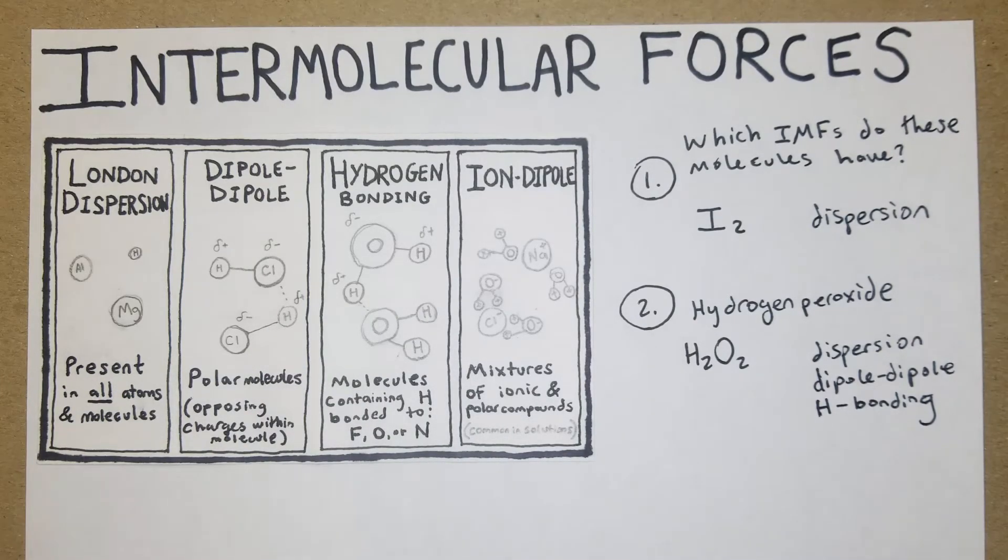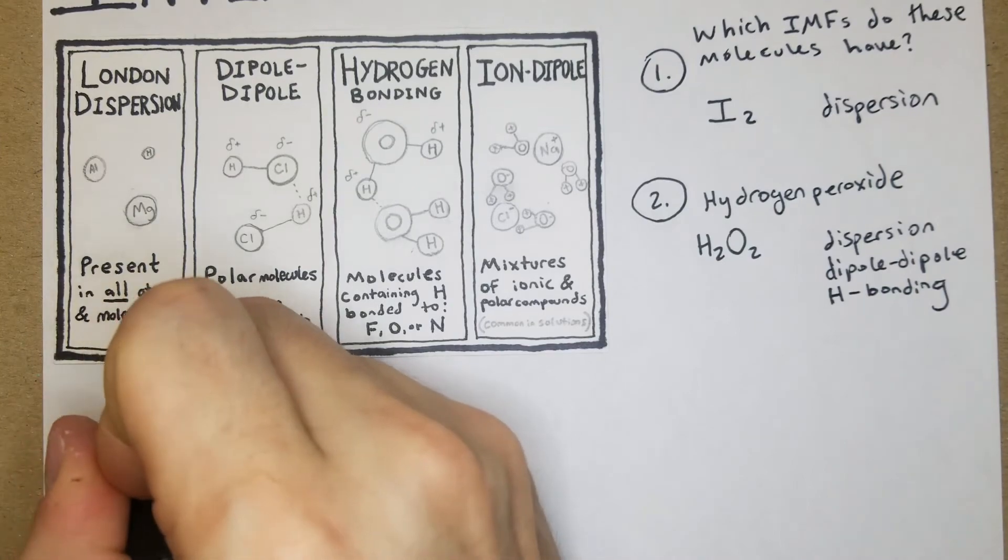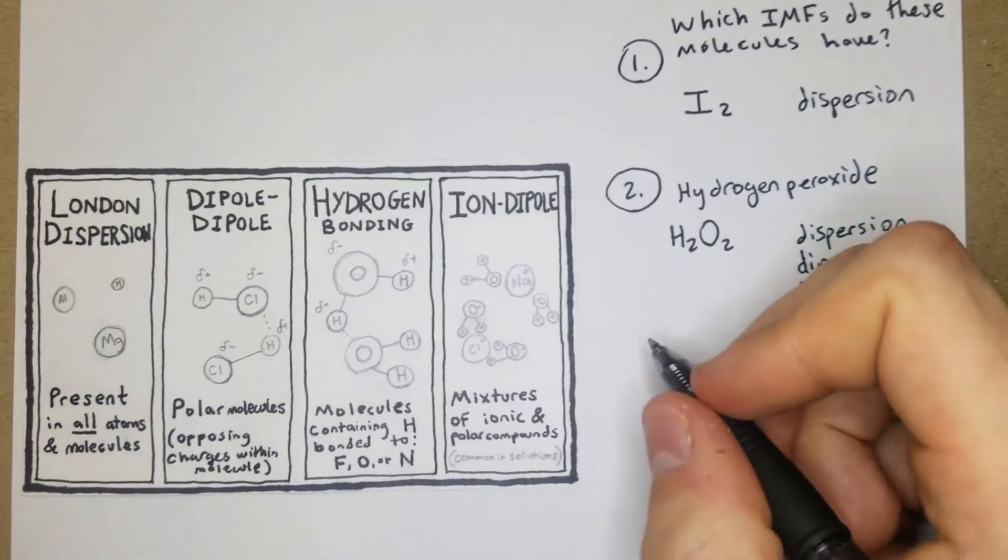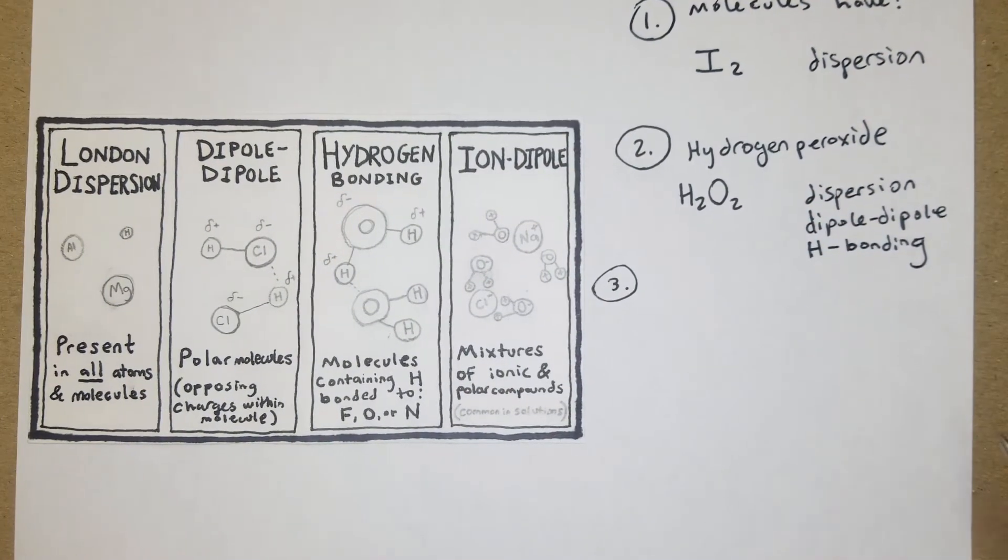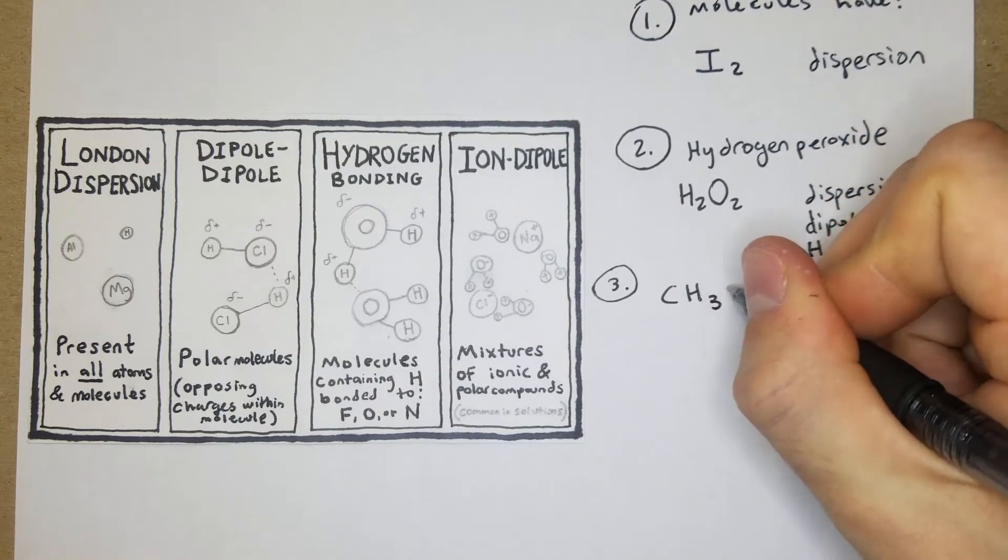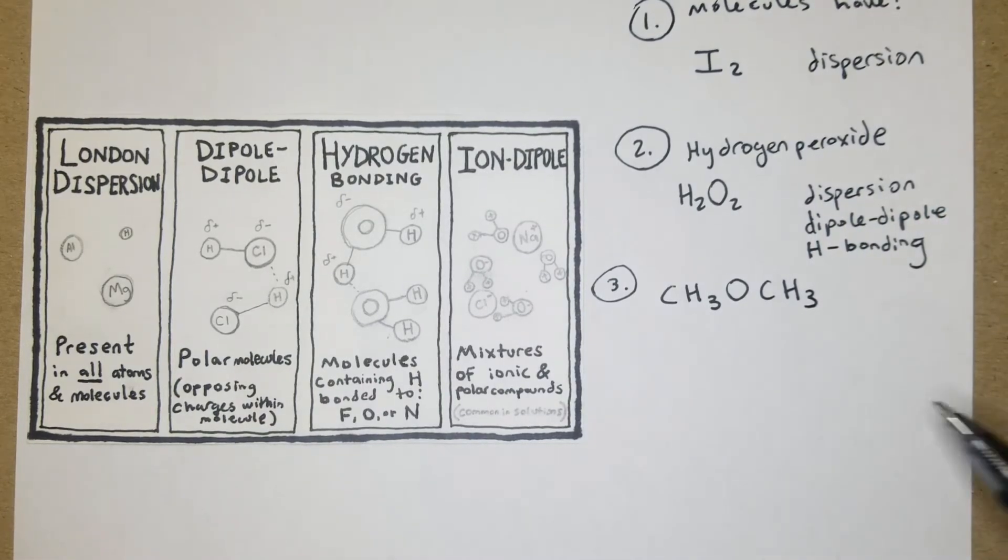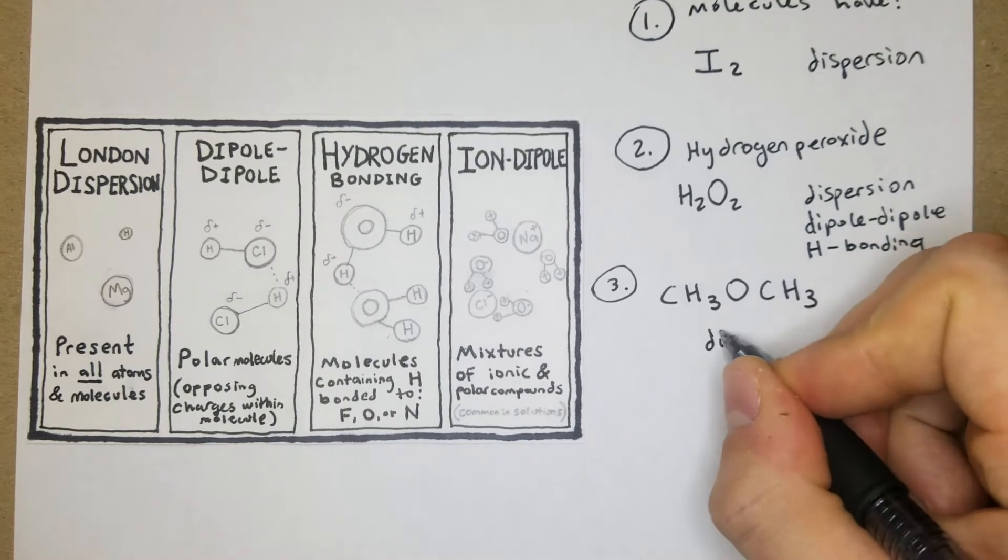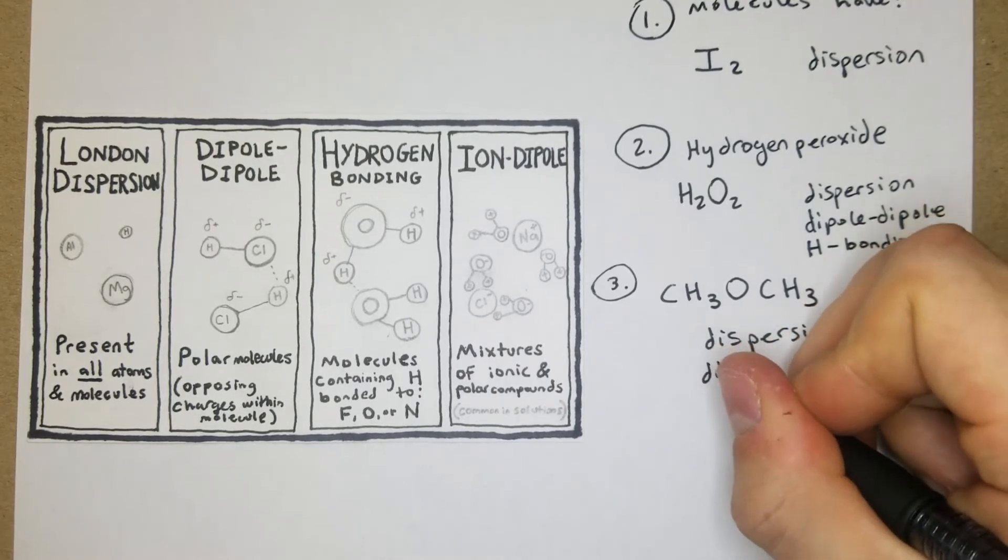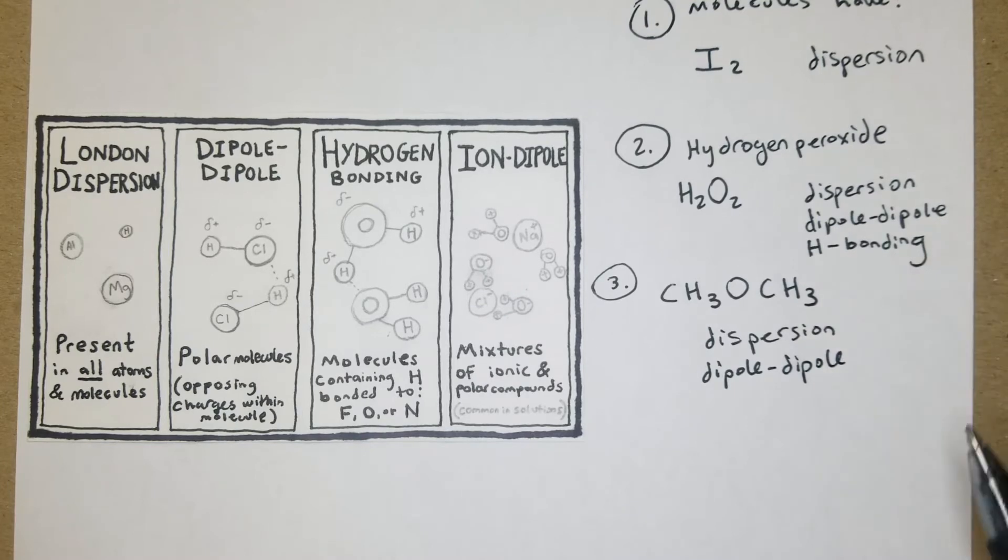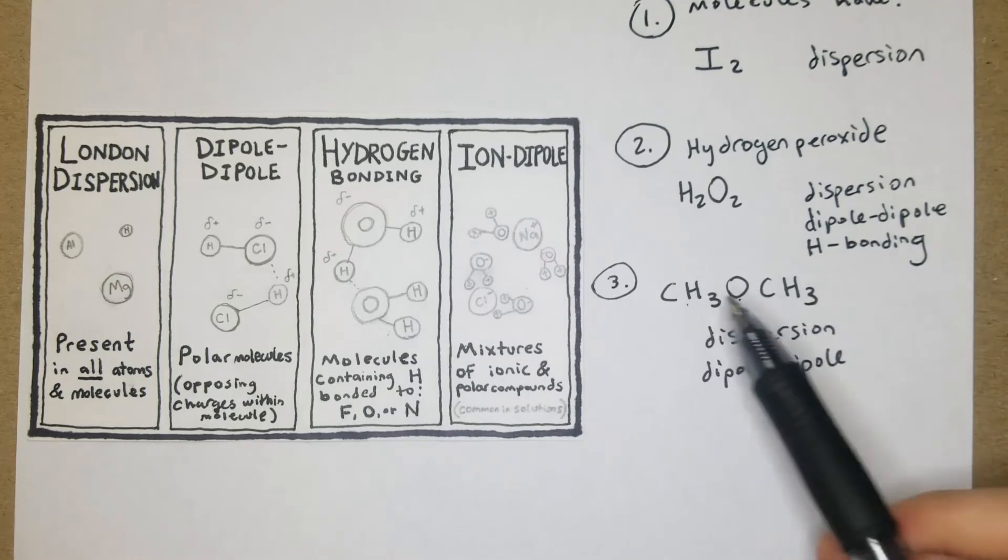For three, we're going to have CH3OCH3. For this one, you can take your best guess. It's going to have dispersion forces and it's going to have dipole-dipole, but this one does not have hydrogen bonding even though you can look at the compound and tell that there's an O and there's an H.